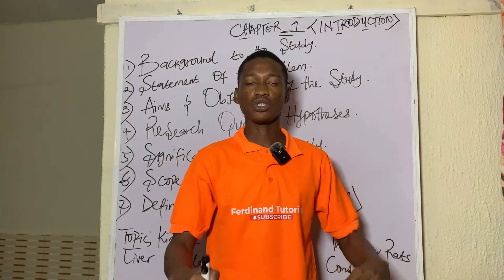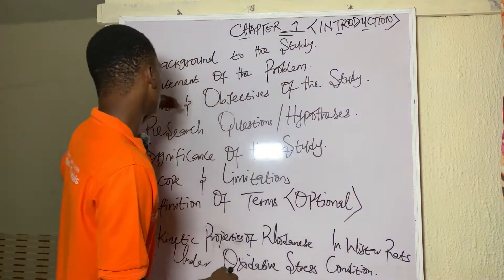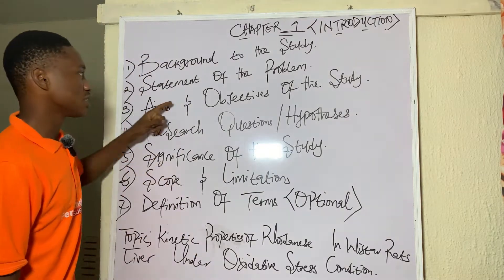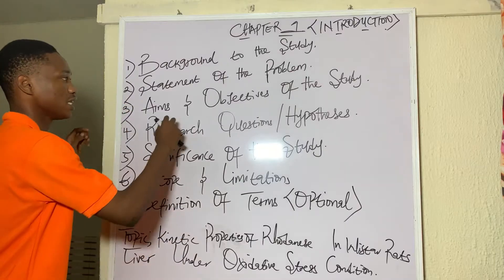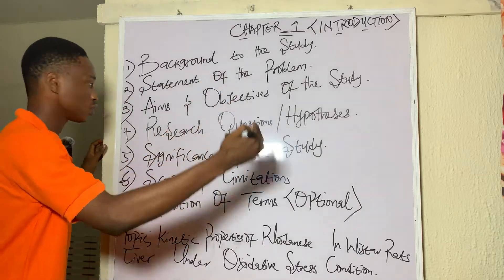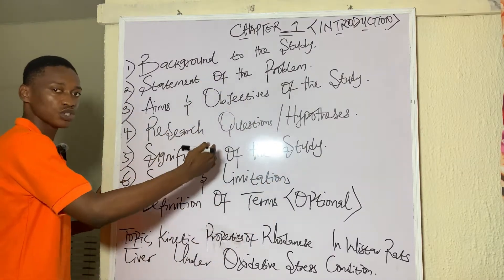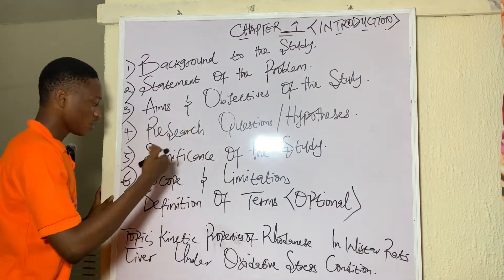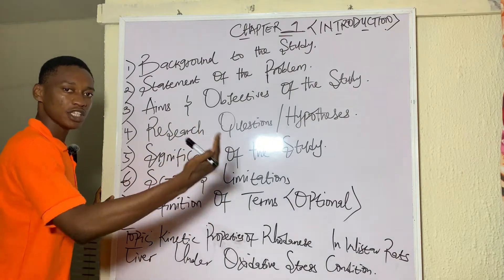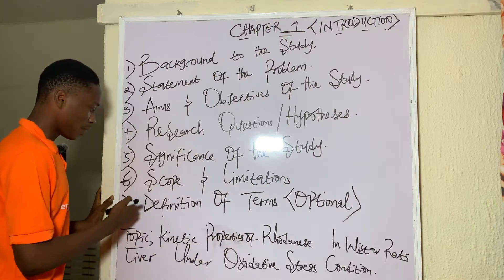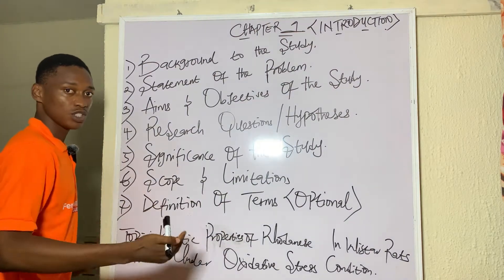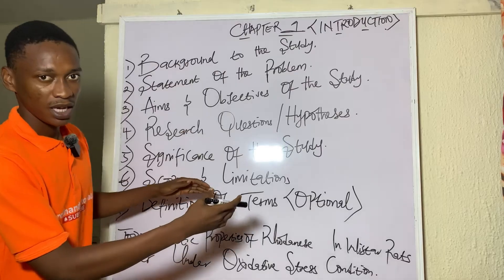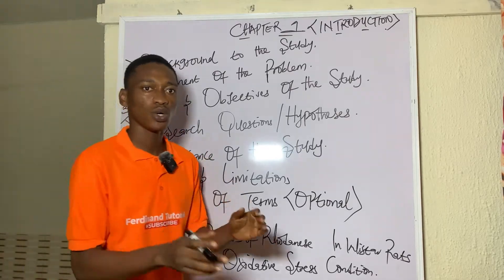We're talking about Chapter One, which is the introduction. The sections we'll cover are: background to the study, statement of the problem, aims and objectives of the study, research questions or hypothesis, significance of the study, scope and limitations, and definition of terms — which is optional. I will explain each and every one of these.